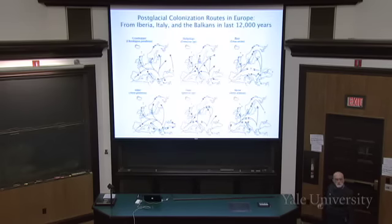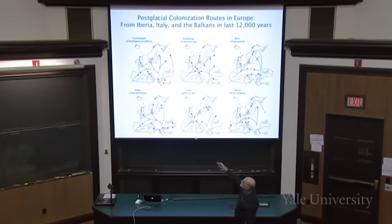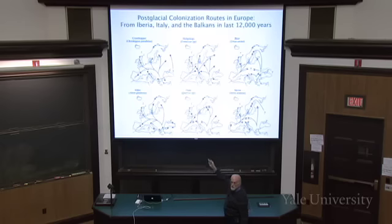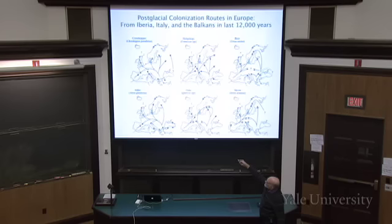Let's start with some of Godfrey Hewitt's work. This has to do with what happened in Europe after the glaciers melted. At the peak of the Last Ice Age, the glacier came down out of Scandinavia and got down into northern Germany and Poland. The English Channel was dry, because so much water had been locked up in the continental ice sheets that the level of the Earth's oceans dropped about 100 meters.